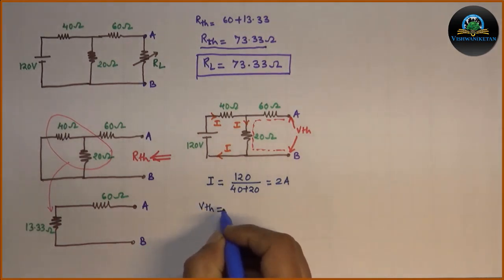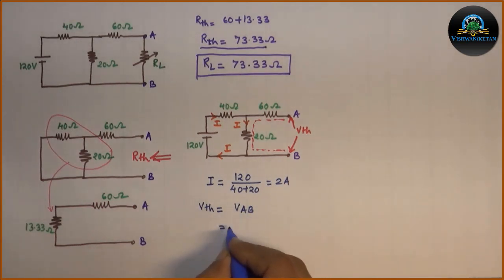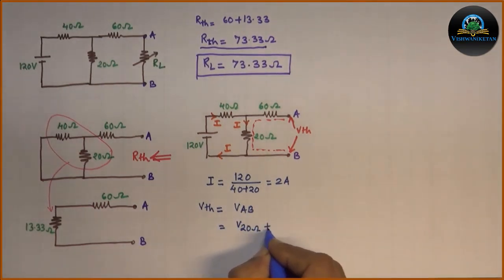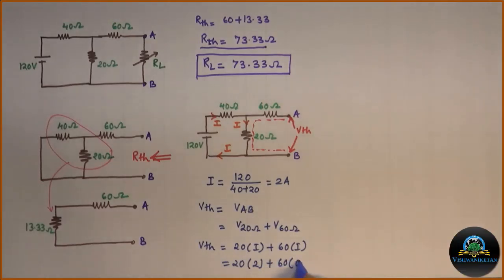Then VTH will be VAB, that is voltage across 20 ohm plus voltage across 60 ohm. That is 20 into I plus 60 into I. Substitute value of I, for 60, I is 0.